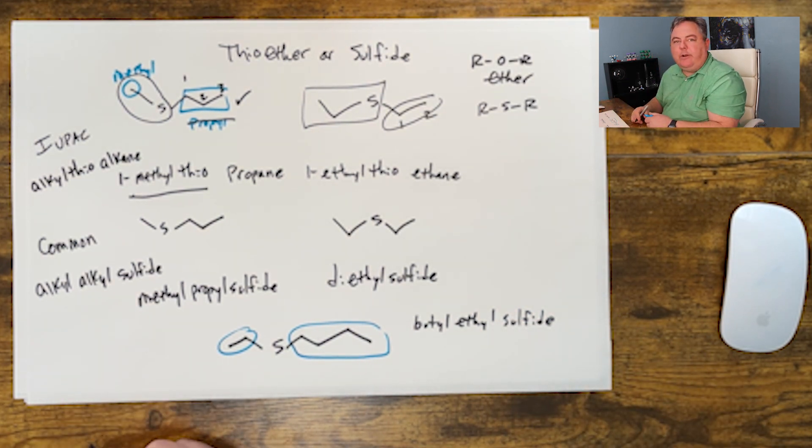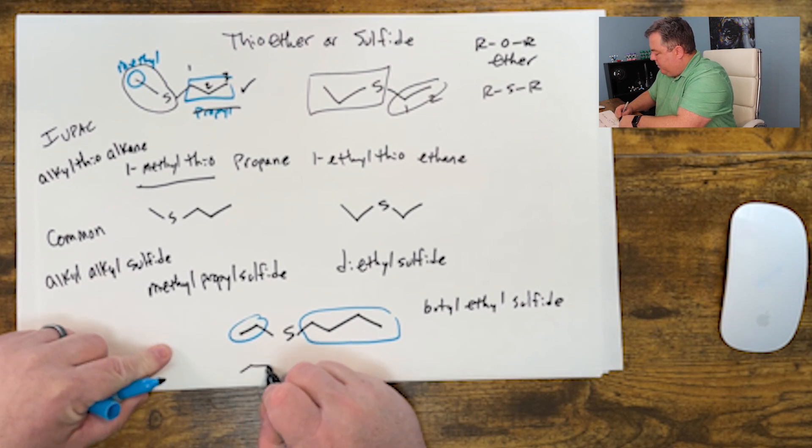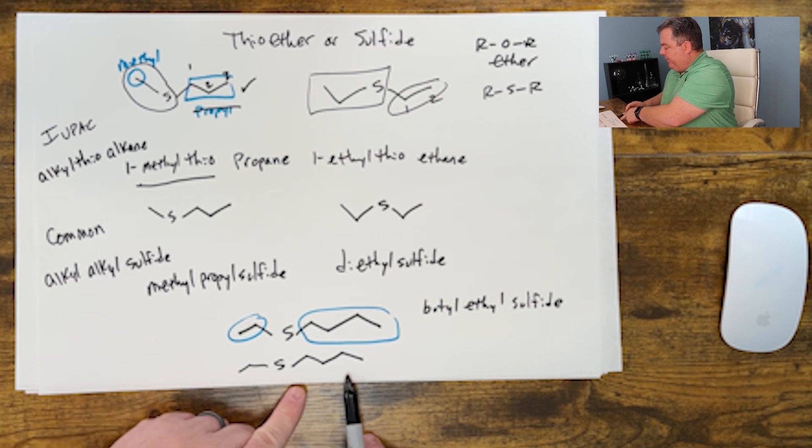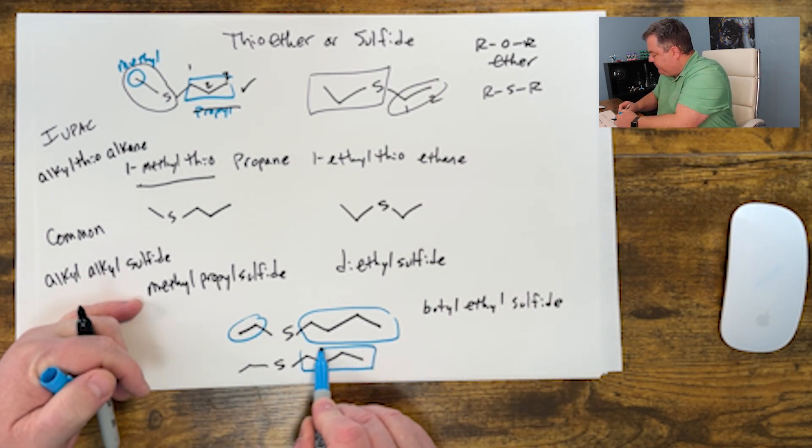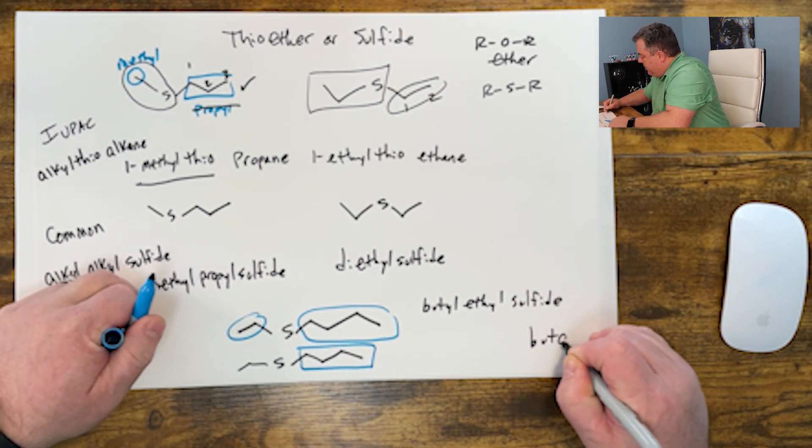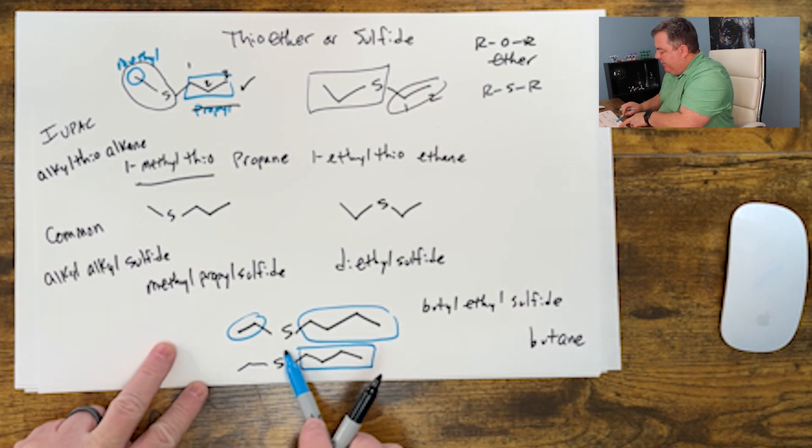And everybody would know what you're talking about. If you wanted to name it through IUPAC, we find the longest carbon chain: two carbons and four carbons. So we name this part first. It'll be some kind of butane since there's four carbons in the base chain.